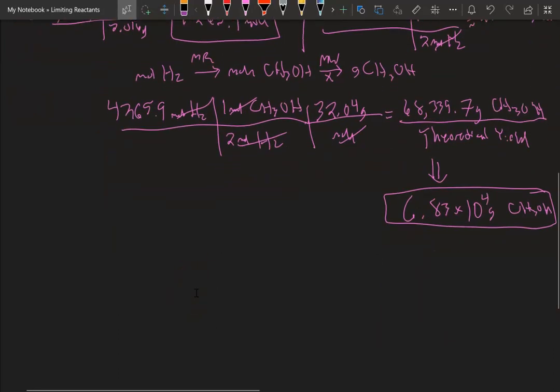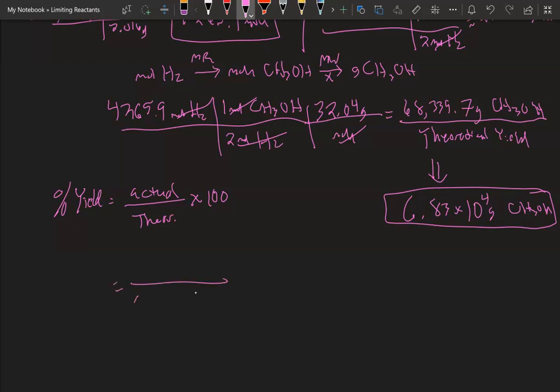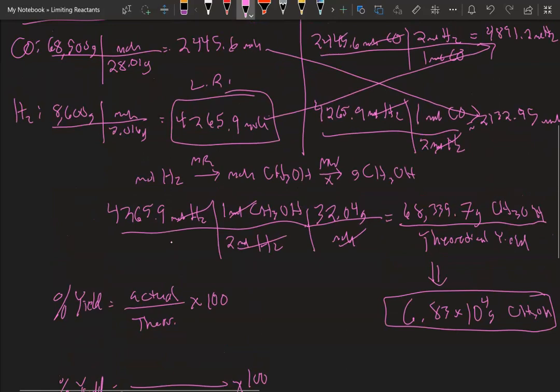Now the next part is figuring out percent yield. So the first thing is knowing the equation percent yield. It's going to be actual divided by theoretical times 100. Now the theoretical we just calculated as 6.83 times 10 to the 4th grams. Alright. So what we need to know is what is the actual yield from this reaction? So that goes back up to the information here.